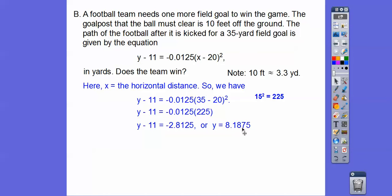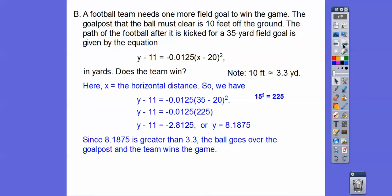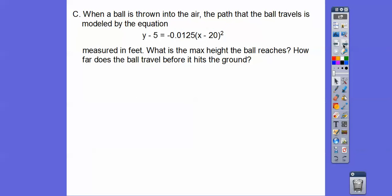So this is in terms of yards. This is how high, Y is how high the ball goes up. So it goes up 8.18 yards. So will that clear 3.3 yards? Yes. So since it clears that, the ball goes over the goalpost, and they'll win the game. And this, again, excludes whether they made it through the two uprights.